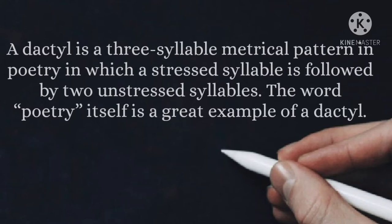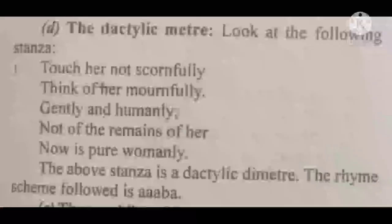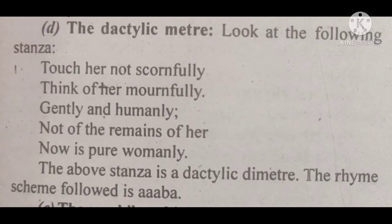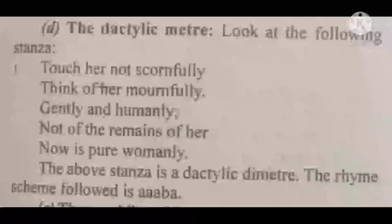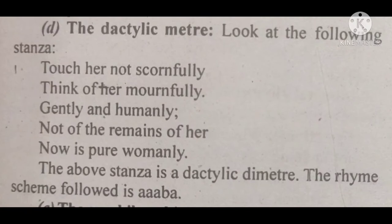Let's read out this: 'Touch her not scornfully, think of her mournfully, gently and humanly, not of the remains of her, now is pure womanly.' This above stanza is Dactylic dimeter. The rhyme scheme followed is A A A B A.